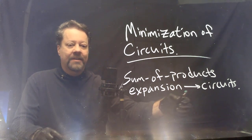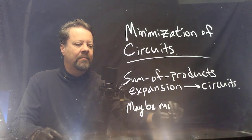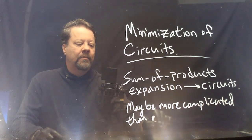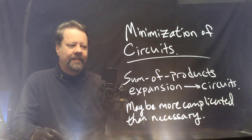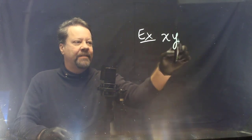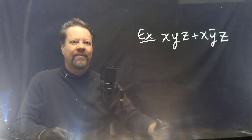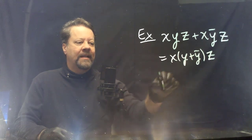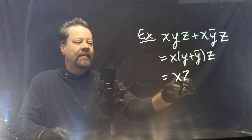However, these circuits might be much more complicated than actually required. So the question becomes, what is the most efficient circuit to accomplish the same goal? As an example, consider the sum of products expansion xyz + xȳz. This clearly is x times (y + ȳ)z. Since y + ȳ is always true, this is the same thing as xz.